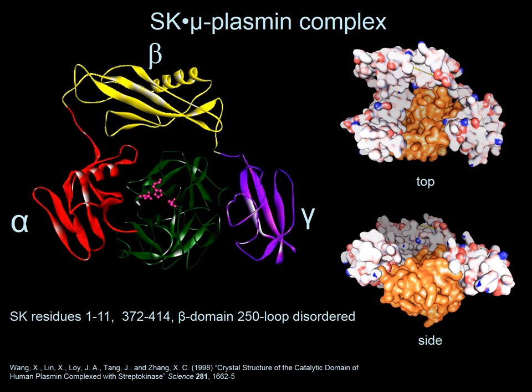What is not seen in any of these structures is the N-terminal 1 to 11 sequence, the C-terminal 42-residue segment, and the 250 loop, which should be on the left side of the beta domain. These are just invisible because they cannot be seen — they're too mobile. Our toolbox for studying the mechanism of plasminogen activation by SK includes equilibrium binding and kinetic studies.